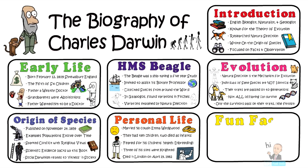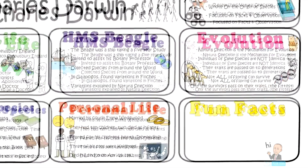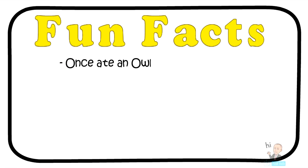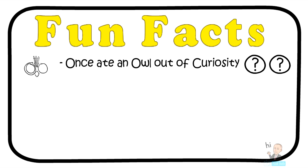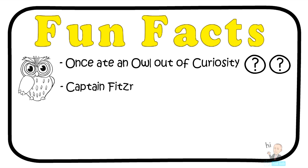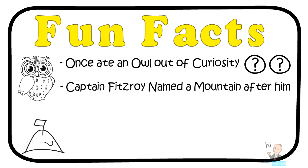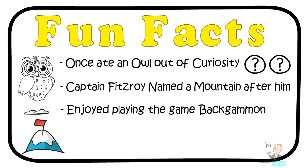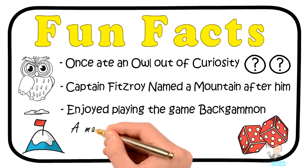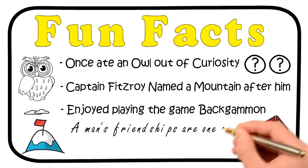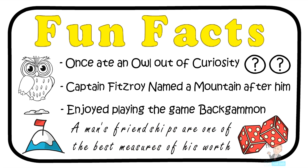Now for some fun facts. Charles Darwin once ate an owl out of curiosity — he was always curious about things, though he wasn't able to eat the whole owl, unlike the hawk that he did once eat. His old captain, Fitzroy from the HMS Beagle, named a mountain he discovered after Charles Darwin — it is called Mount Darwin. Darwin also loved to play backgammon, often playing when he was sick and bored. A famous quote from Darwin himself: 'A man's friendships are one of the best measures of his worth.'